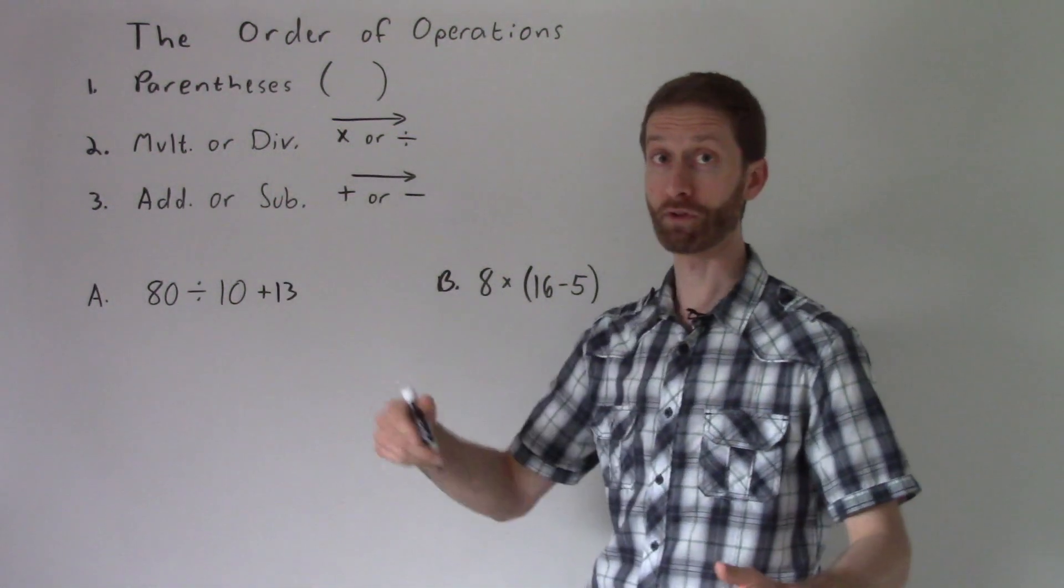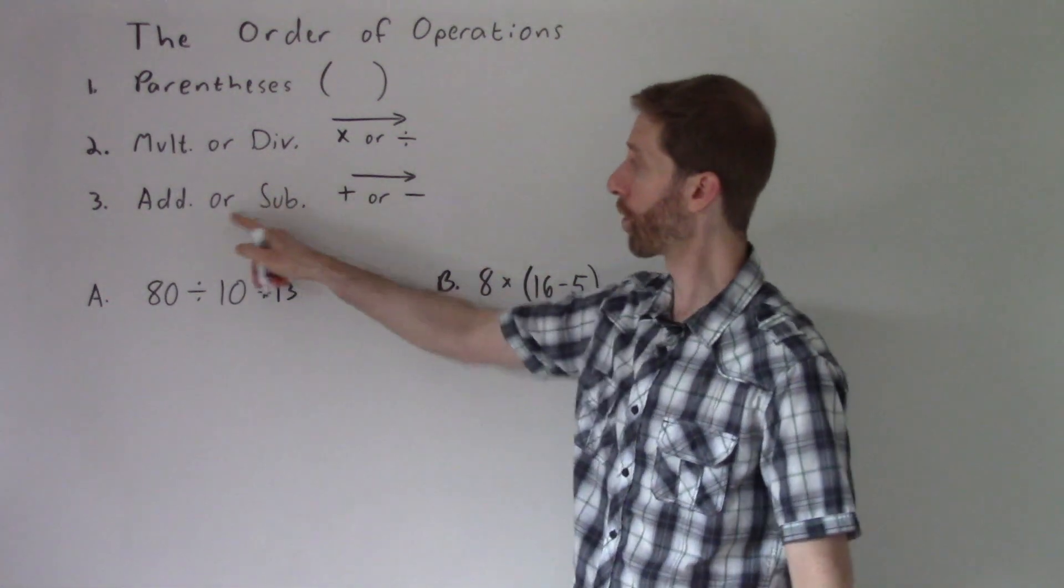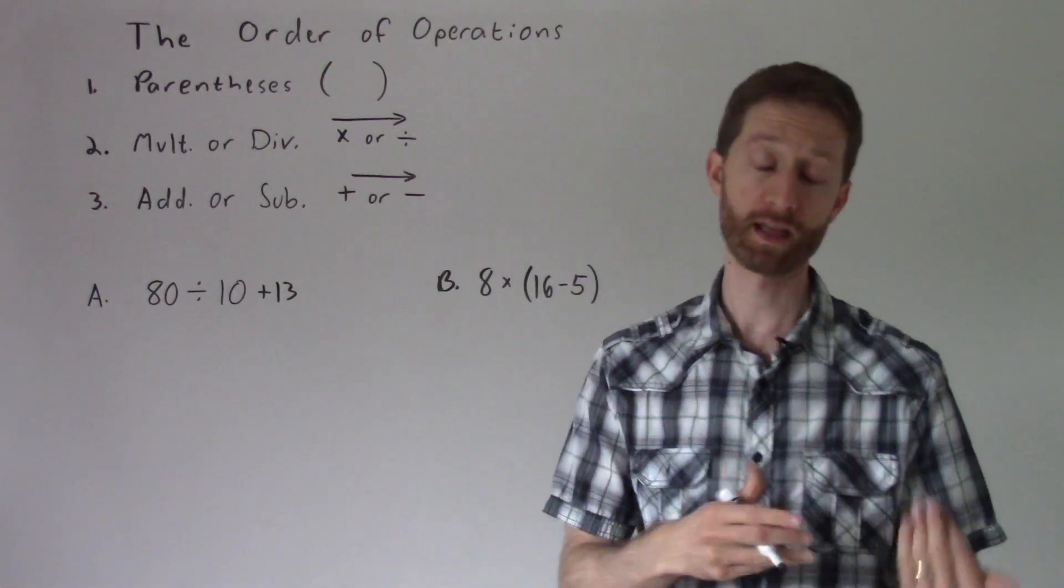Then after that, the final level of operations would be addition or subtraction. And it's or because we go left to right again. So if subtraction comes before addition, we do that first, left to right.